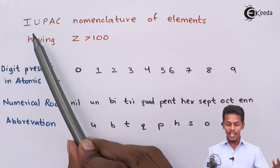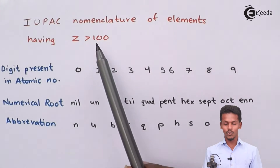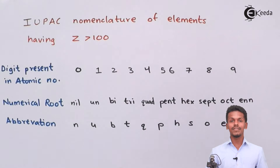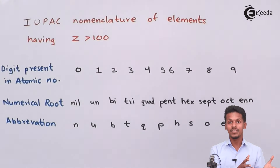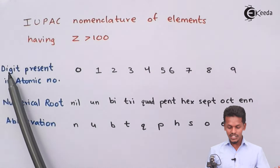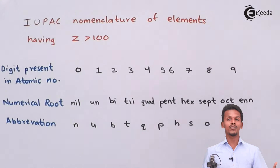We are going to talk about the IUPAC nomenclature of elements having atomic number Z more than 100. Before understanding how to give the IUPAC name, or how to determine the atomic number from an IUPAC name, it is essential to understand the rules. Since we are talking about atomic numbers more than 100, they could be 101, 102, 103, and so on.